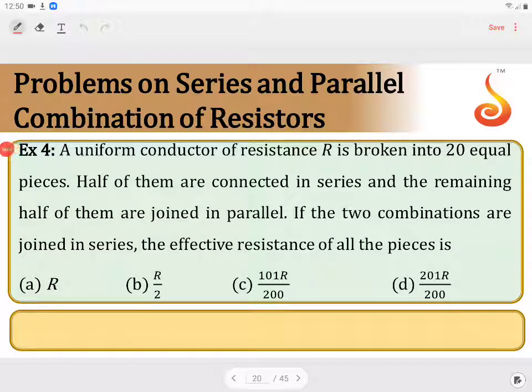A uniform conductor of resistance R is broken into 20 equal pieces. Half of them are connected in series and the remaining half of them are joined in parallel. If the two combinations are joined in series, the effective resistance of all the pieces is...